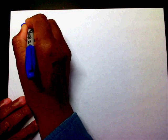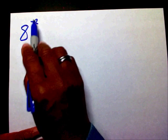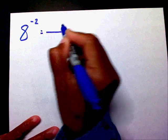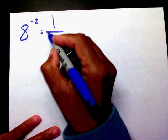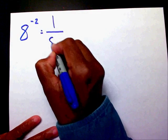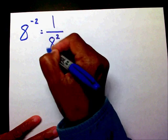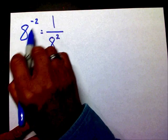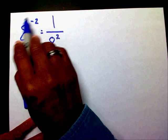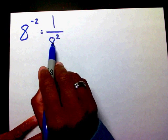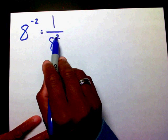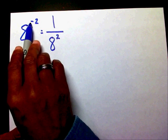Let's try another one: 8 to the negative 2. When I see that negative, I'm going to immediately think fraction — I need to create a fraction. So I'm going to put a 1 in my numerator and the 8 to the 2nd power in the denominator. When the negative 2 moves from the numerator and goes to the denominator, it becomes positive — it changes signs, going from negative to positive.